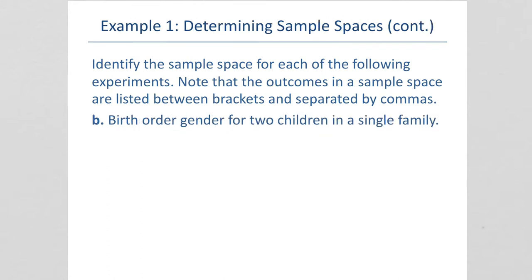Birth order gender for two children in a single family. We want to list all the possible outcomes. You could have a boy and then a boy. You could have a boy and then a girl. You could have a girl and then a girl. Or, you could have a girl and then a boy.